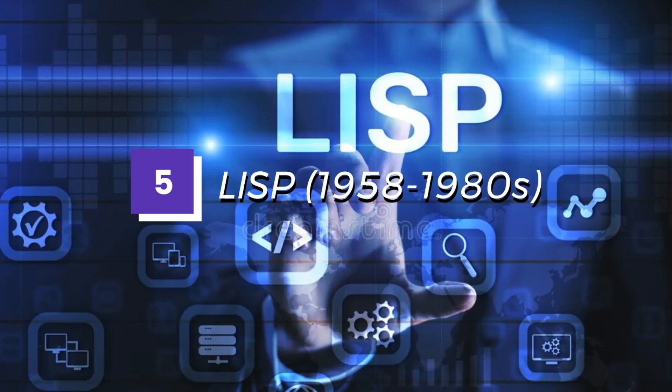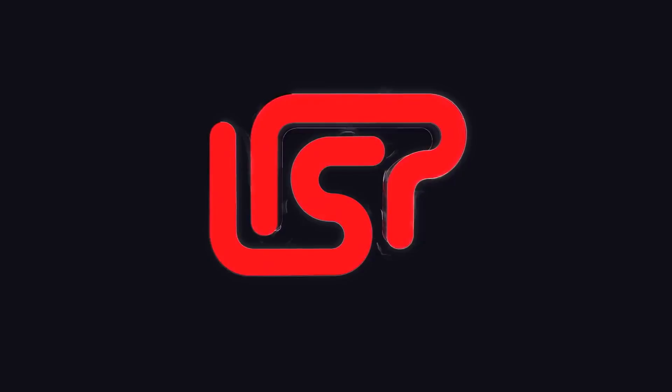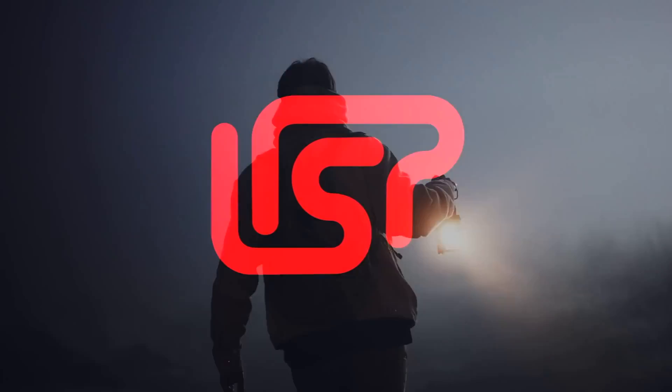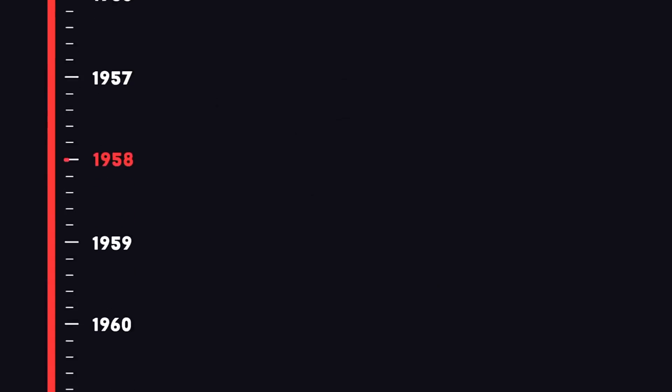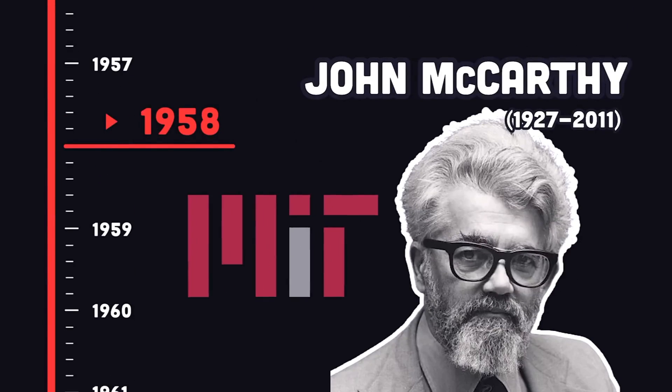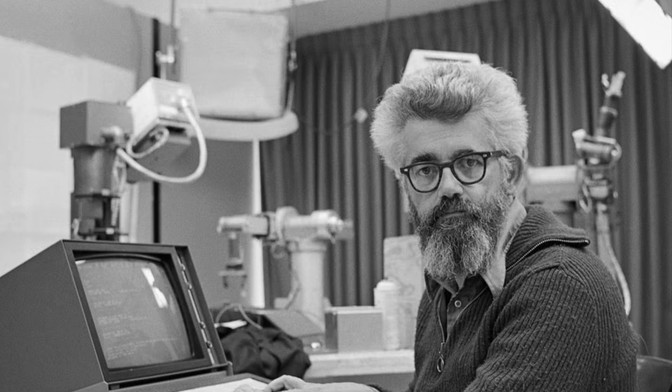Number 5. LISP. LISP, which stands for List Processing, is a high-level programming language that was first developed in the late 1950s. It was invented by John McCarthy, who is considered one of the fathers of artificial intelligence.